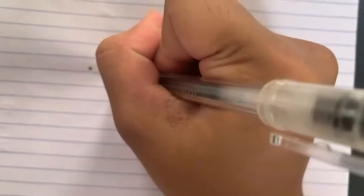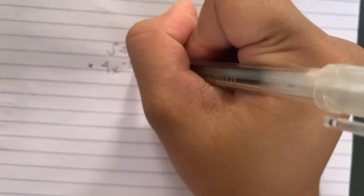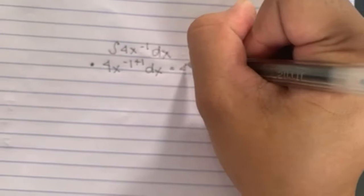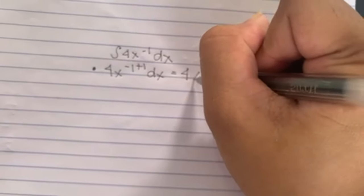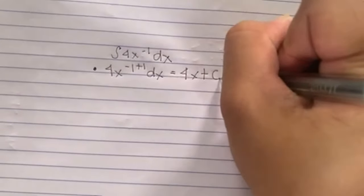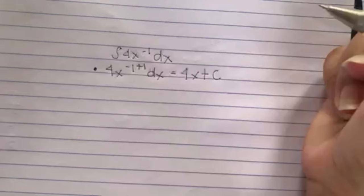Integral of 4x to the power of negative 1, dx. So all you need to do is to add positive 1 to the negative exponent. So 4x to the power of negative 1 plus 1, dx will become 4x to the power of 0,